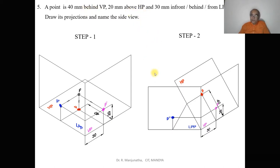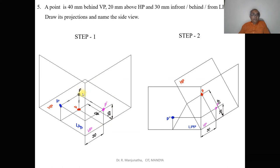To decide the quadrant: when you look from the front view you can see the distance above the horizontal plane, so above HP. When you look from the top view you can see the distance behind the vertical plane, so behind VP. Therefore the point is in the second quadrant. Point P is in space — above HP and behind VP.